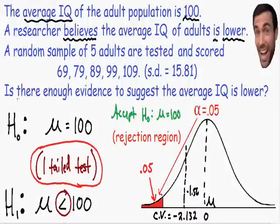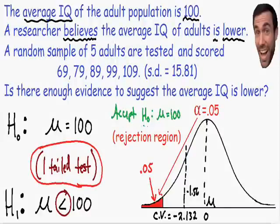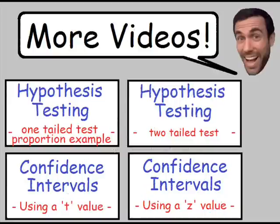So, is there enough evidence to suggest that the average IQ is lower? No, there is not enough evidence, because we accept our null hypothesis that the average stays the same — the average IQ is still equal to 100.